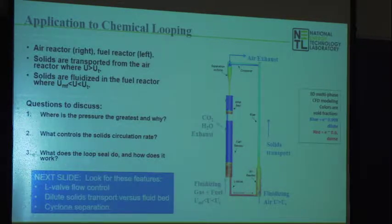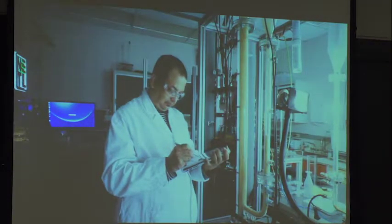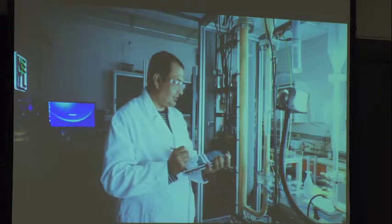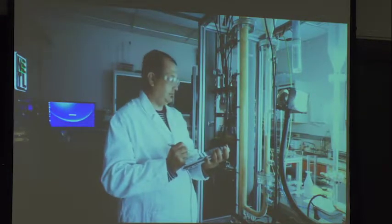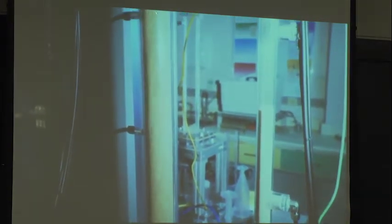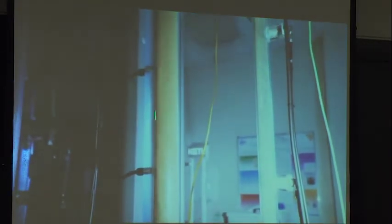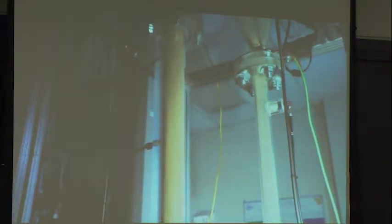On the next slide I've got a movie showing in cold flow all those processes. You'll see in the background a cold version of what we just described. Here's the L-valve — it's not a sharp right angle, but you can see the material coming this way, then blown up through the reactor. Take a look when it stops — which way does it look like the material is moving in that part of the vessel?